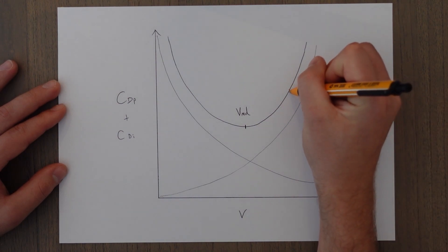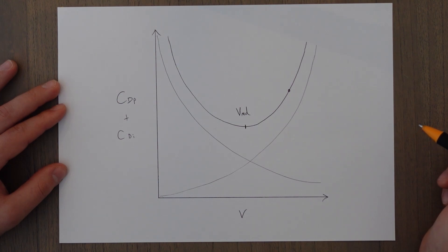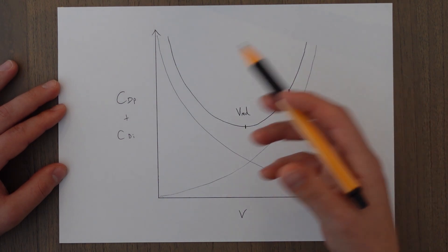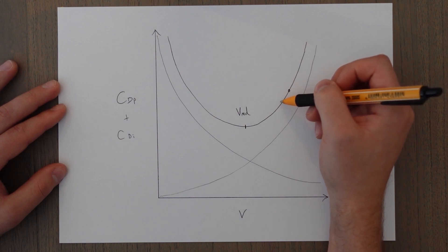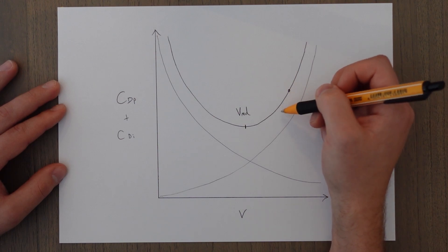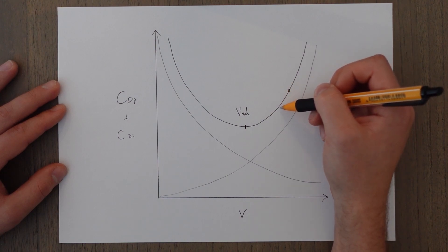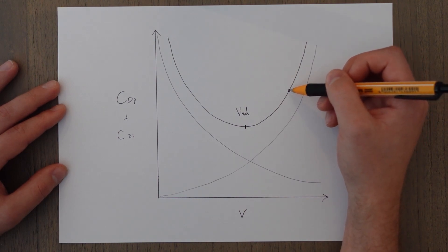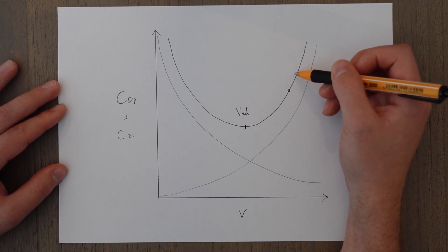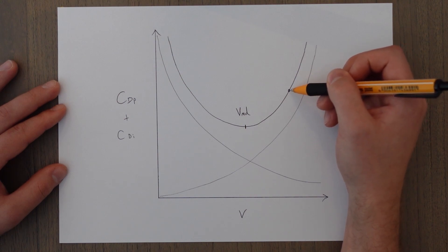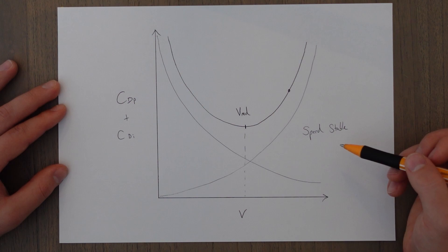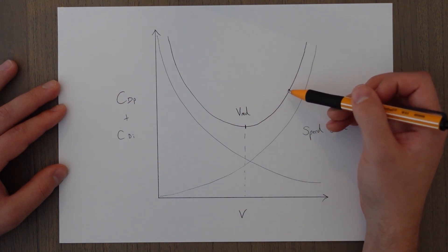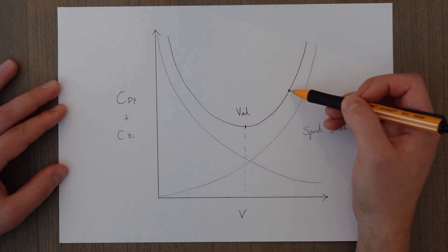Another interesting point is speed stability. On the right side of the total drag curve, if an external factor such as a gust of headwind slows us down, the drag actually goes down. If we maintain the same thrust setting, the aircraft will accelerate because there is more thrust than drag. The opposite is also true — if we speed up, drag will increase and the aircraft will decelerate back to the balanced point. The whole region to the right of VMD is known as the speed stable region.